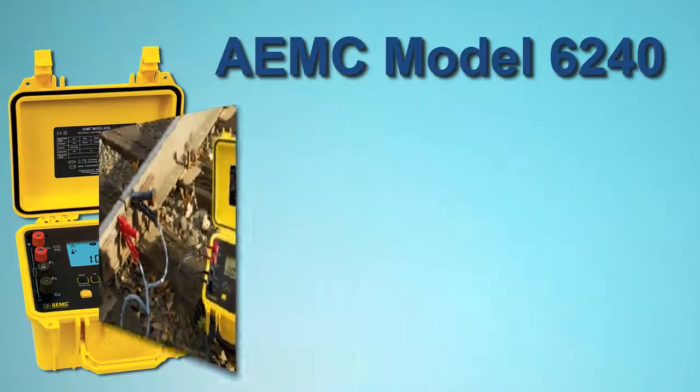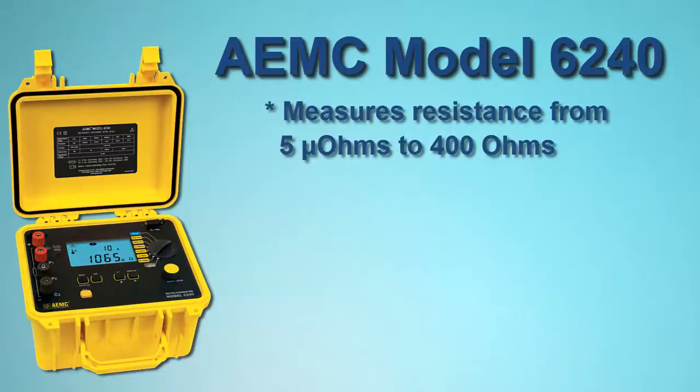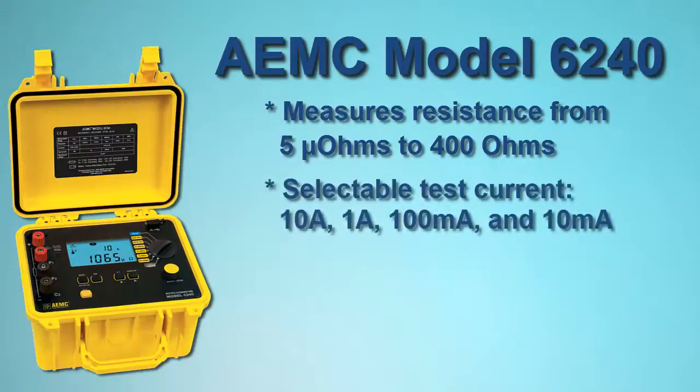The Model 6240 measures the resistance from 5 microohms to 400 ohms. The instrument provides selectable test currents of 10 amps, 1 amp, 100 milliamps and 10 milliamps and includes a polarity reversal function.